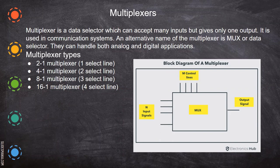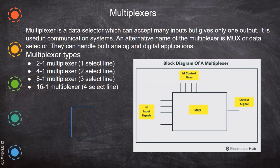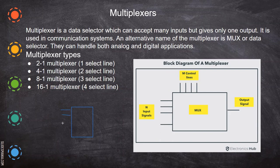In this video, we are going to see about multiplexers. A multiplexer is a data selector. We have four inputs and only one output. Whatever may be the number of inputs, you will have only one output.